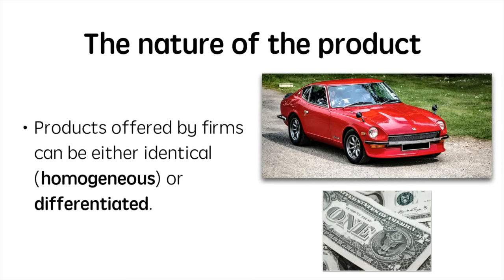Products that firms offer can be homogeneous, slightly differentiated, or differentiated. For example, dollars in the foreign exchange market are homogeneous or identical when sold by different firms, whereas sports cars tend to be highly differentiated by a producer. Slight differentiation can also exist, as is the case in the production of different basketballs.